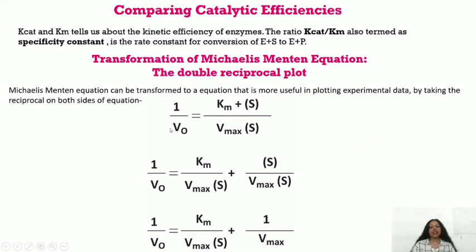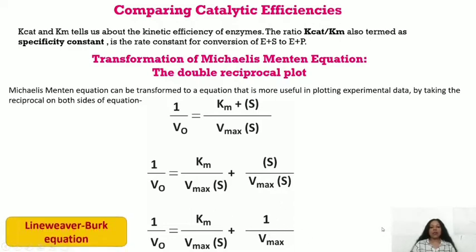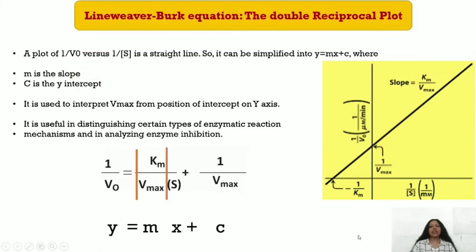Solving further: 1/v₀ = Km/(Vmax × [S]) + [S]/(Vmax × [S]), and after canceling [S] in the second term: 1/v₀ = (Km/Vmax)(1/[S]) + 1/Vmax. This is the Lineweaver-Burk equation. The reciprocal is taken because a plot of 1/v₀ versus 1/[S] is a straight line, which is simple to work with, expressible as y = mx + c.